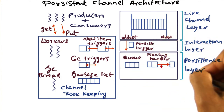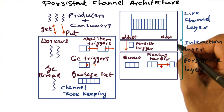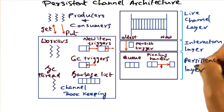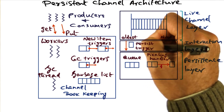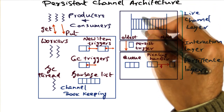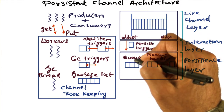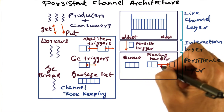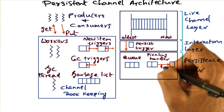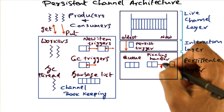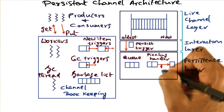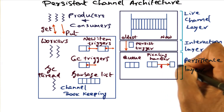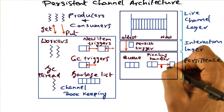The second main functional layer in the channel architecture is the persistence layer. The interaction layer sits between the live channel layer and the persistence layer. Based on the persistence triggers it receives from the live channel layer, the persistence layer takes items from the channel and decides how to persist them. The application can have a say in how items are persisted by providing a pickling handler — a function that the runtime should use every time it decides to persist some items from the channel. For example, an application may specify to not store all images as-is on archival storage, but to condense them in a specified fashion.